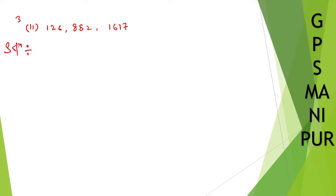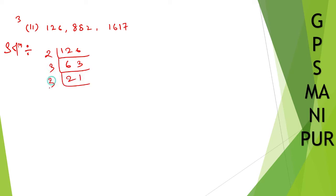First, let us find the prime factors of 126. Dividing: 2 into 63, 3 into 21, 3 into 7, and 7 into 1. So we can write 126 = 2 × 3 × 3 × 7.